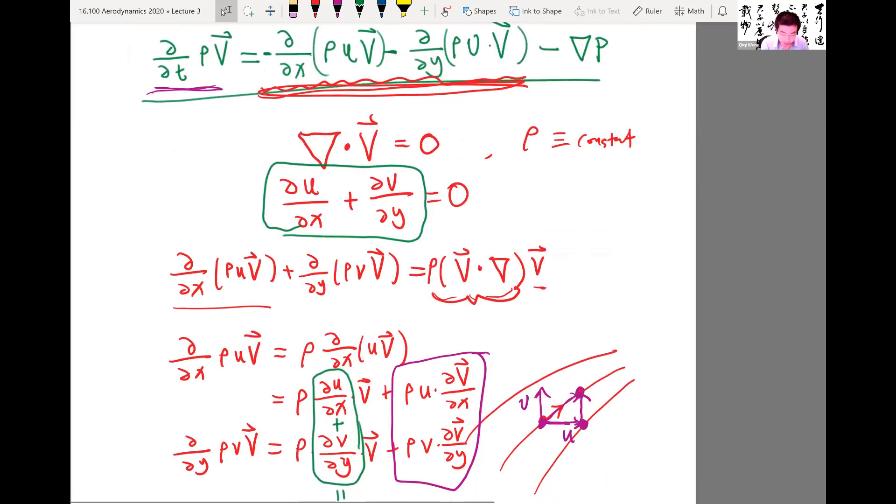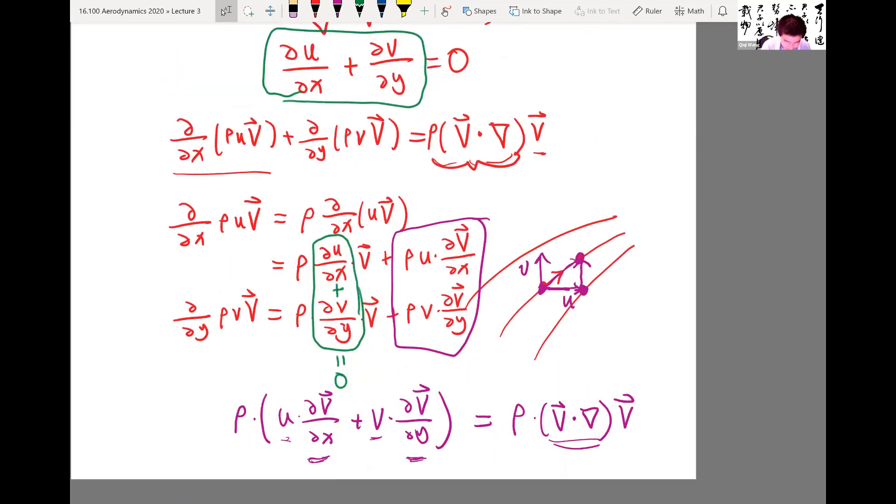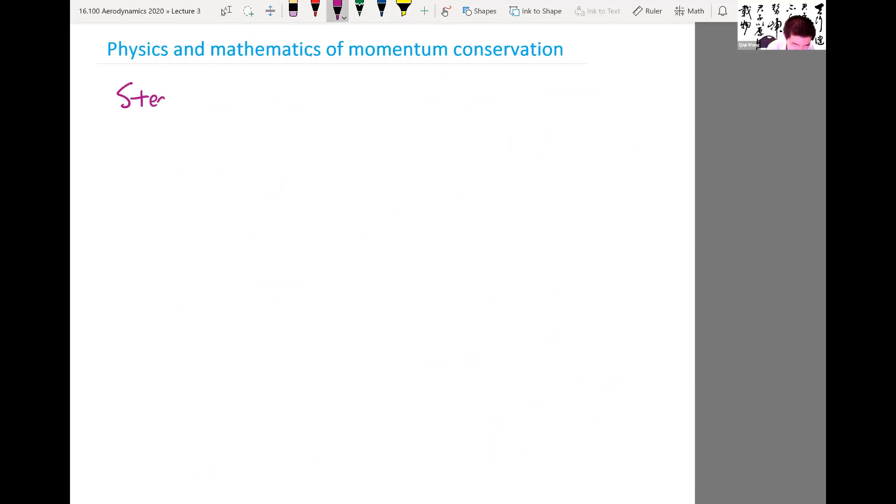And in particular, if we have a steady state flow field, the time derivative, remember, we are fixing a control volume, fixing a point, right? The time derivative is zero. And then the only thing we have is the directional derivative of momentum, okay? And the pressure force, they balance each other. So this is the momentum conservation for steady state flows.